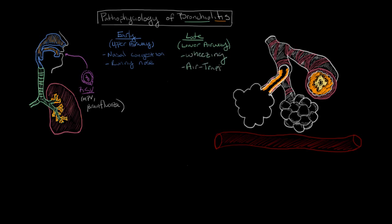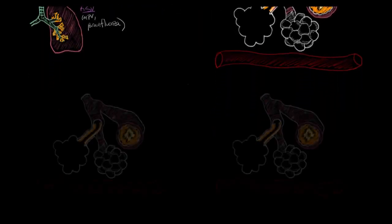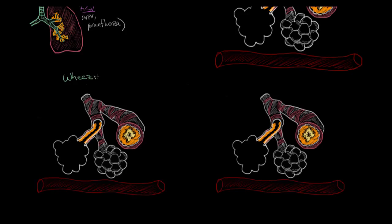It's this inflammation and subsequent narrowing of the airways that results in the classic lower airway signs and symptoms of bronchiolitis — wheezing and air trapping. In order to understand wheezing, the inflammation of this bronchiole has caused the airway to become narrower. For a certain amount of air to travel through that bronchiole in the same amount of time as if it weren't narrowed, that air is going to have to travel a lot faster — both as it goes in and as it goes out. The sound of this air rushing through the bronchiole can be heard over the chest with a stethoscope. Wheezing is described as a high-pitched musical sound, mostly heard during expiration.